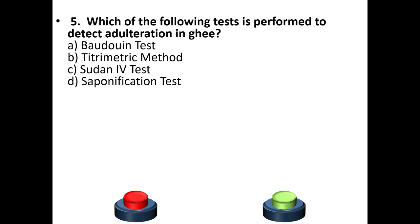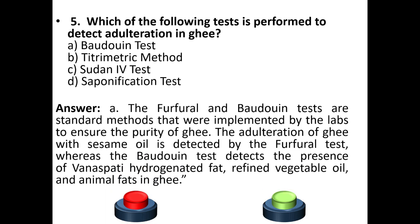Fifth question: Which of the following tests is performed to detect adulteration in ghee? Options: Baudouin test, titrometric method, Sudan-4 test, saponification test. The answer is option A: Baudouin test. The furfural and Baudouin tests are standard methods used to ensure the purity of ghee. The adulteration of ghee with sesame oil is detected by the furfural test, whereas the Baudouin test detects the presence of Vanaspati hydrogenated fat, refined vegetable oil, and animal fats in ghee.